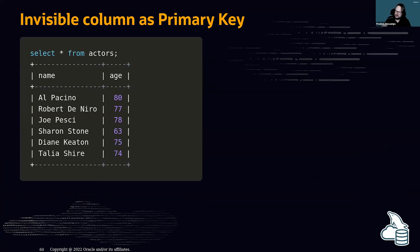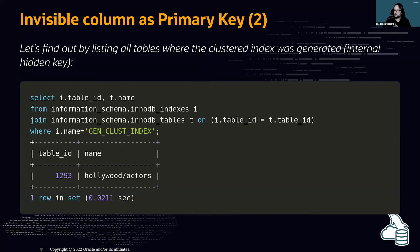Easy — just create a new invisible column and define it as a primary key. MySQL 8 allows you to do that. Let's say we have a table called 'actors' with a name and age column but no primary key.